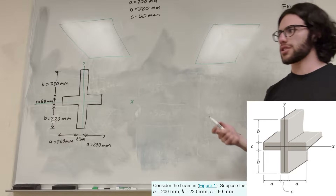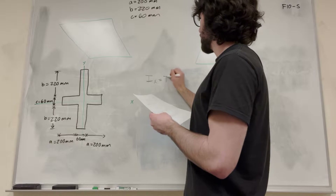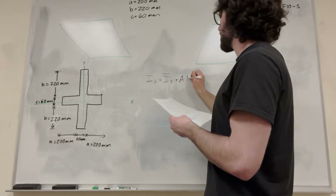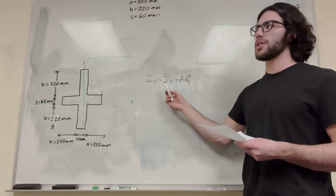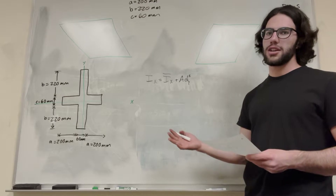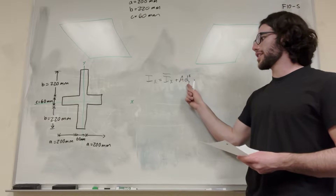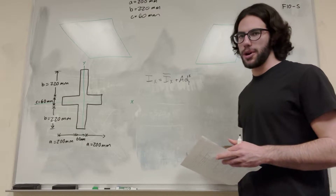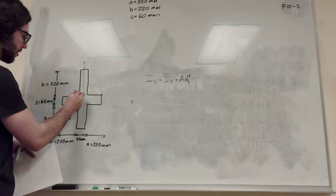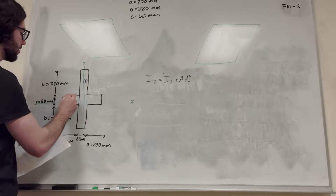So let's start with around the x-axis. The formula we're going to be using is: i of x is equal to i-bar of x plus area times distance in y squared. i-bar of x is something you can find in the back of the book — it's defined for common shapes like rectangles and circles. The area term uses the distance from the centroid of the shape to the x-axis. When we have this complex shape, we want to break it down into simple shapes — the simplest being three rectangles. Let's draw some lines here: this is going to be rectangle 1, this is 2, and this is 3.